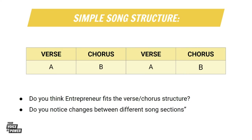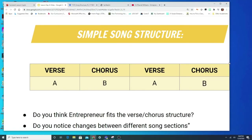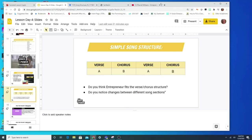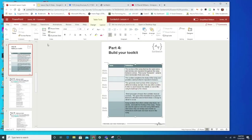Let's learn more about these sections of a song and try to see if we can identify them in Entrepreneur. We're going to get back to some vocabulary in your assignment document. Go to slide five, which is part four, Build Your Toolkit. We're going to learn about these five different terms.